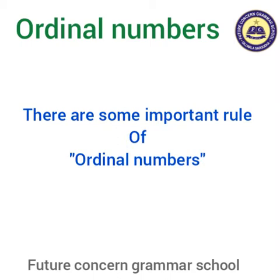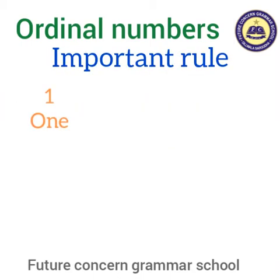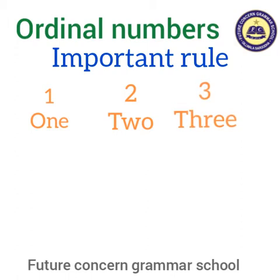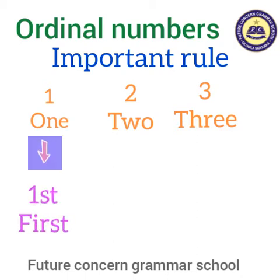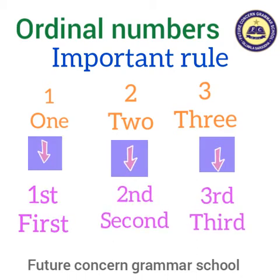There are some important rules of ordinal numbers. First rule is for 1, 2, 3. Batcho, jab hum 1, 2, 3 ko ordinal form mein change kertate hai, toh yeh ban jata hai first, second and third.